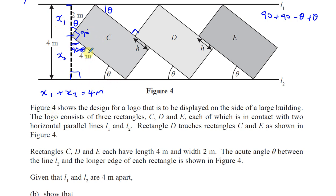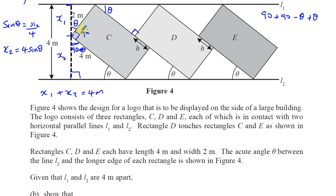We can now express x1 and x2 in terms of theta. We know the rectangle is 4 meters long and 2 meters wide. For x2, it is opposite to theta and the hypotenuse is 4, so sine theta equals x2 over 4, giving x2 equals 4 sine theta. For x1, it is adjacent to theta and the hypotenuse is 2, so cosine theta equals x1 over 2, giving x1 equals 2 cosine theta.